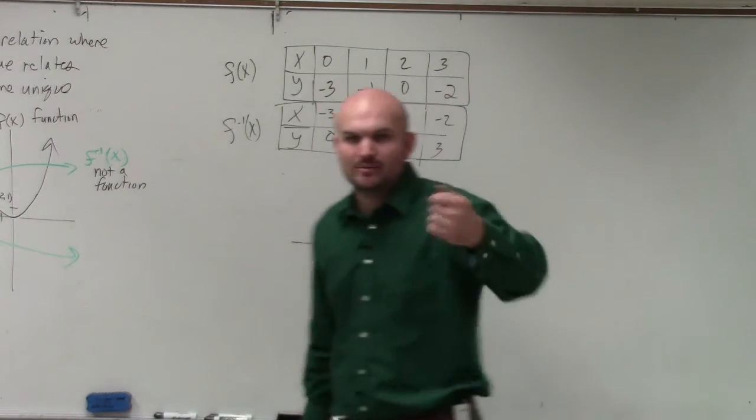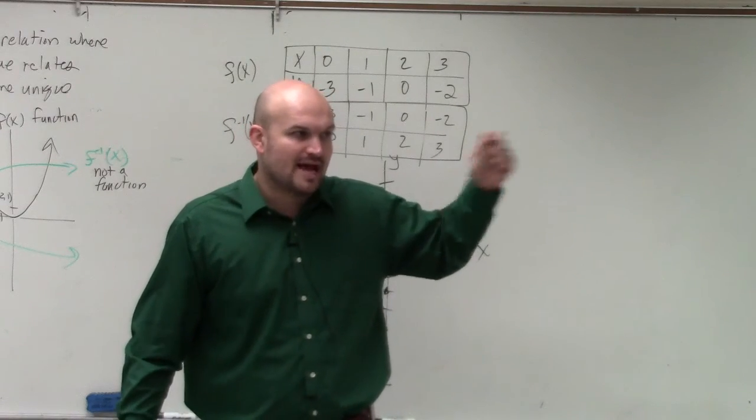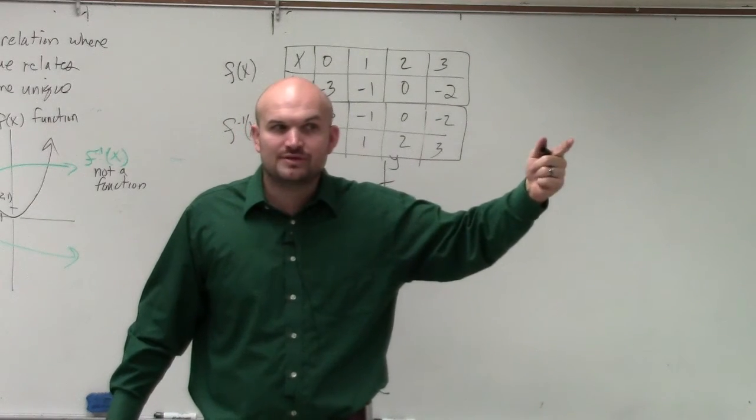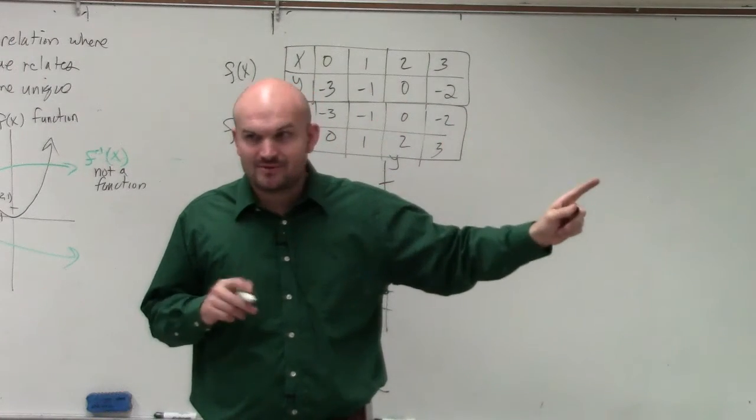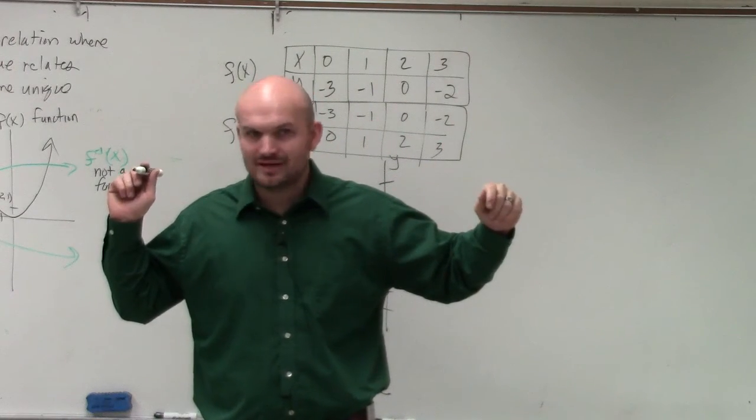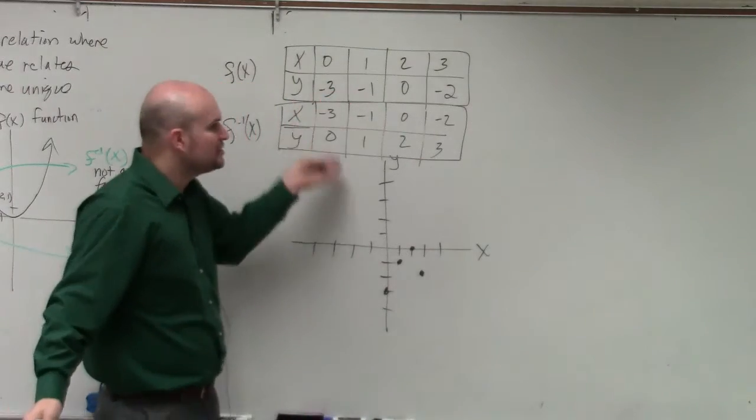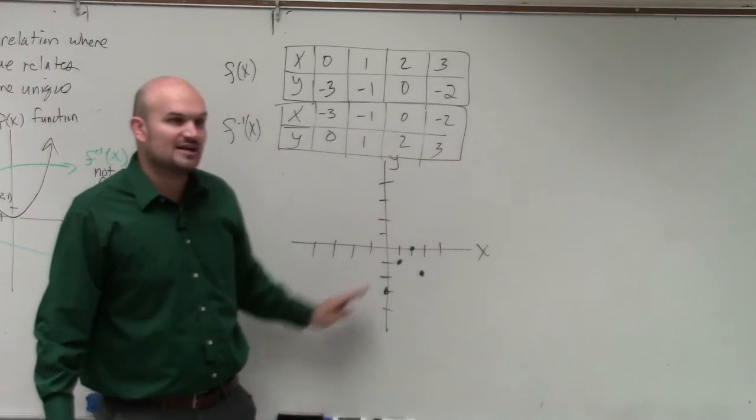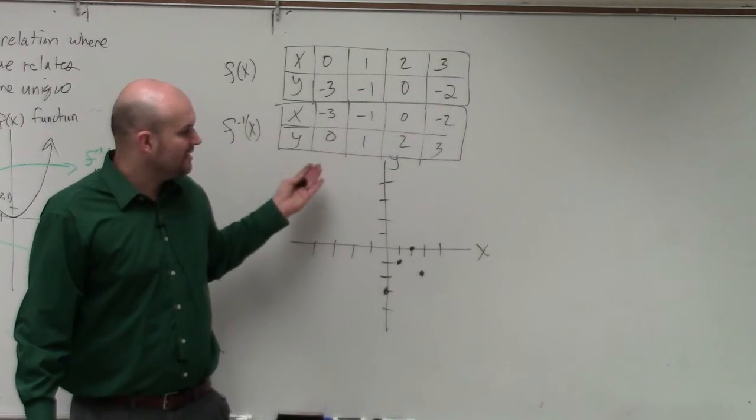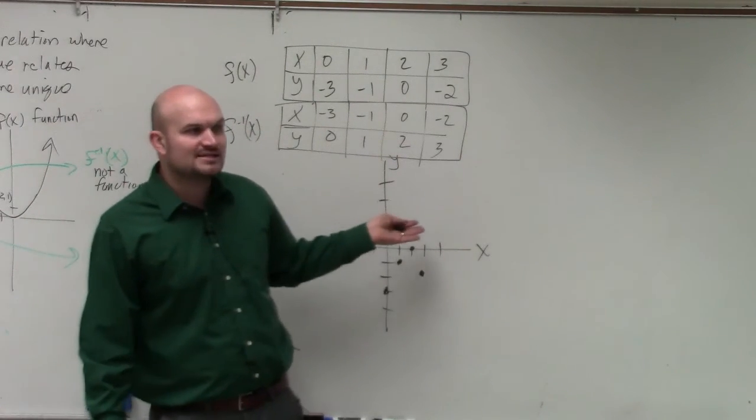Because remember when we were doing the equations? What was the second step? After you replace f of x with y, what do you do next? Swap the x and the y. Do you guys remember writing down my notes? Right? That's all you're doing. It's the same thing. You're just swapping the x and the y. And we also talked about that when we looked at the graph. I showed you once you have a reflection of the y equals x line, the inverse is just a swap of the x and y variables.